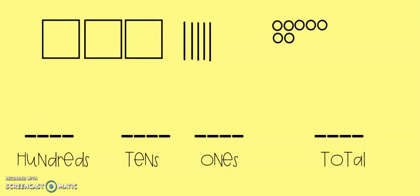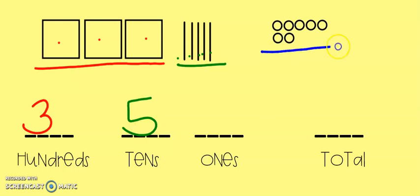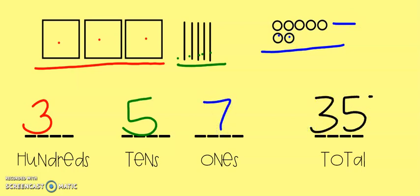Here's another example. Starting with the hundreds, I see I have one, two, three hundreds. Then one, two, three, four, five tens. And then I see some organization in the ones — five on the top, six, seven. So my total is 358.